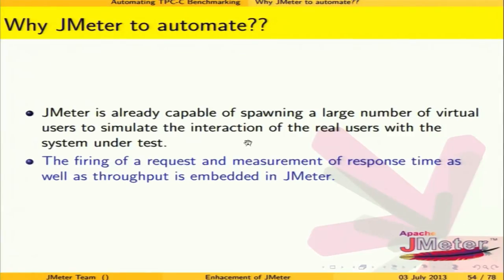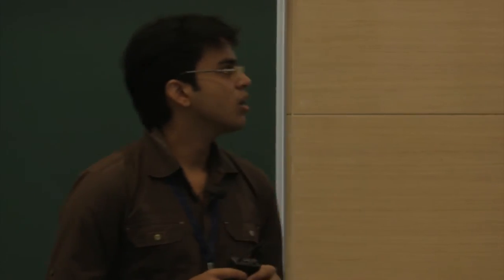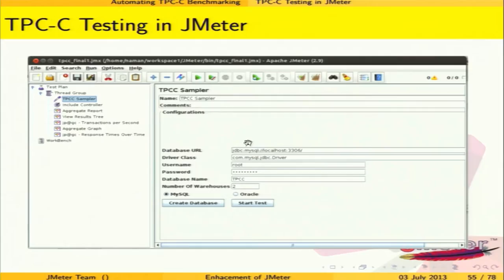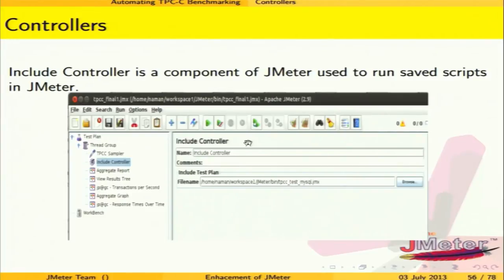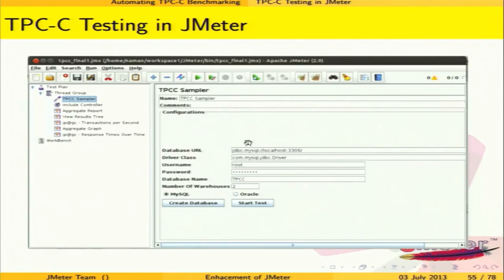We created a TPCC sampler that creates and starts transactions. It requires the database URL, driver, JDBC driver class, username, password, and the name for the database. Currently it supports MySQL and Oracle. When the user clicks 'Create Database', the nine tables and procedures are created, and depending on the number of warehouses specified, the tables are scaled — about 120 MB of data is generated per warehouse.